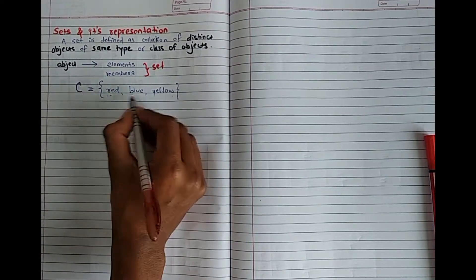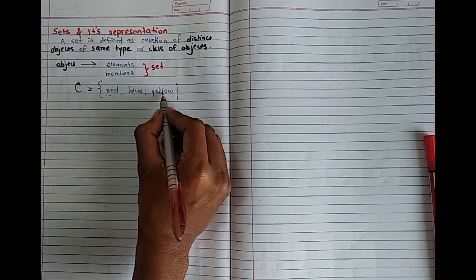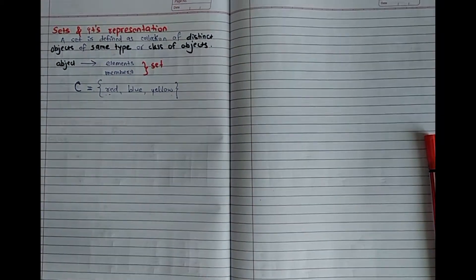If I say red, red is the element of my set C. Blue is my element or member of set C. Yellow is my element or member of C.